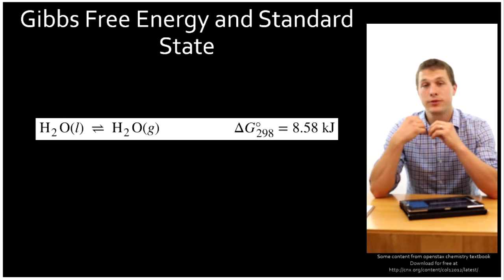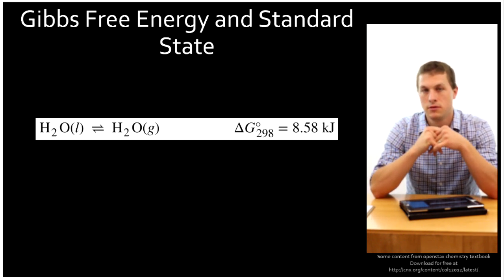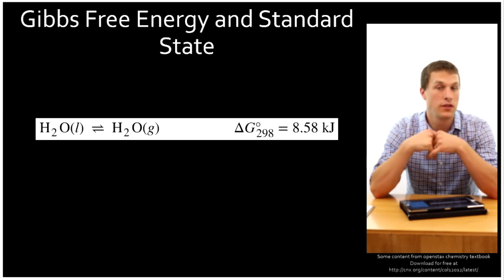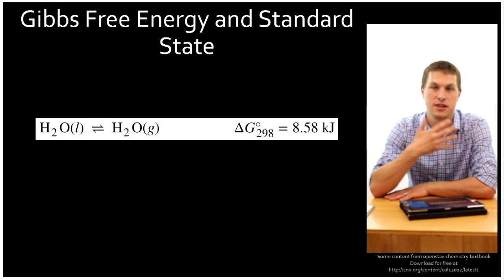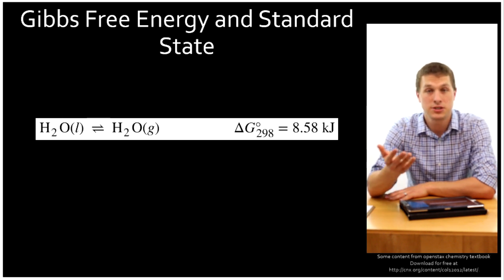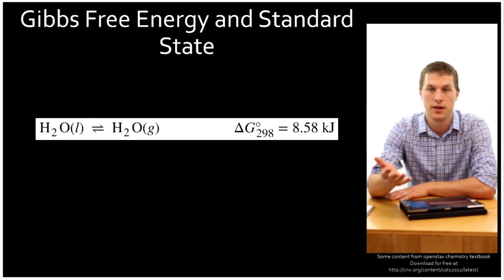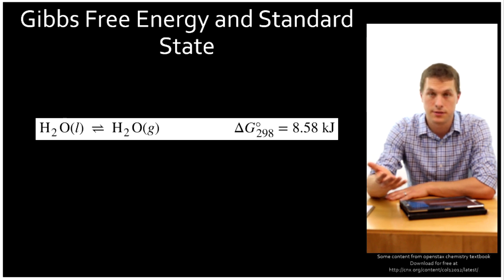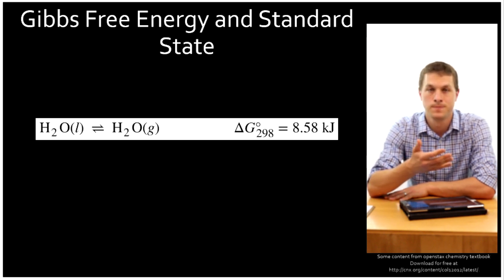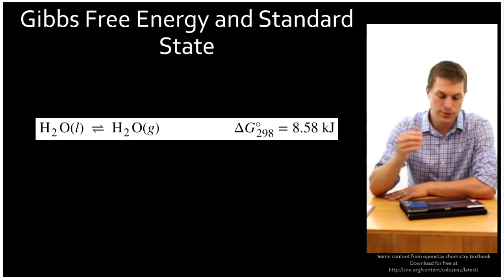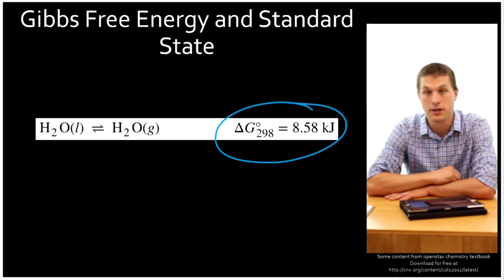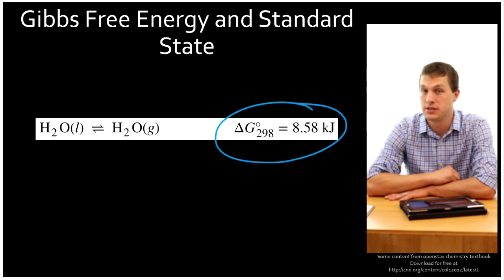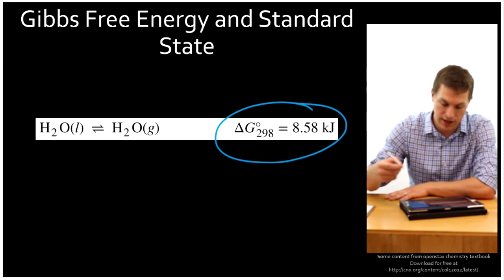Now if Gibbs free energy is the amount of energy you can get out of a reaction, well then that has to depend on the conditions the reaction is run at. So for example if I change the temperature, that changes how much energy I can get out. If I change the pressure of gases, that changes how much energy I can get out. If I change the concentration, that changes how much I can get out. And so what that means is whenever you see a reaction written, like this one below, where it just gives you a Gibbs free energy, that's for a very specific set of circumstances called the standard state.